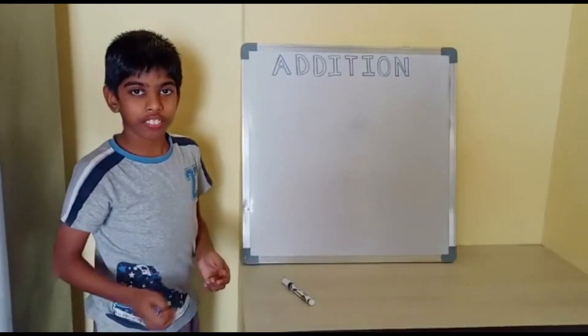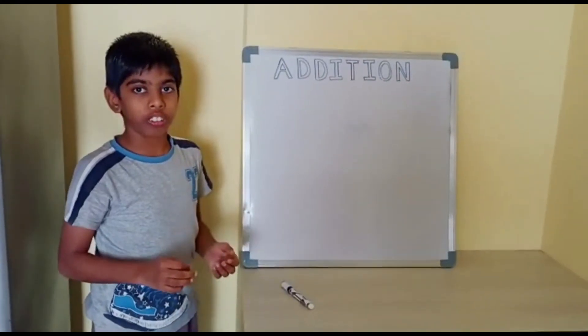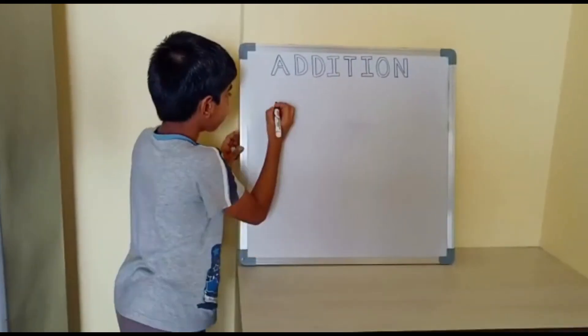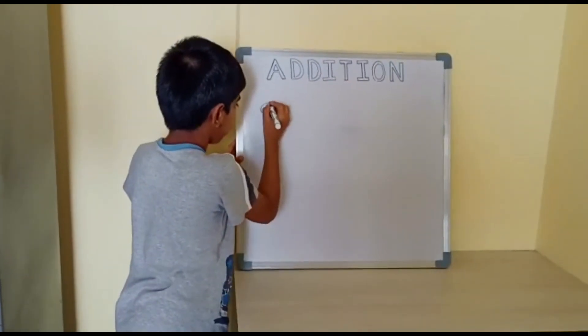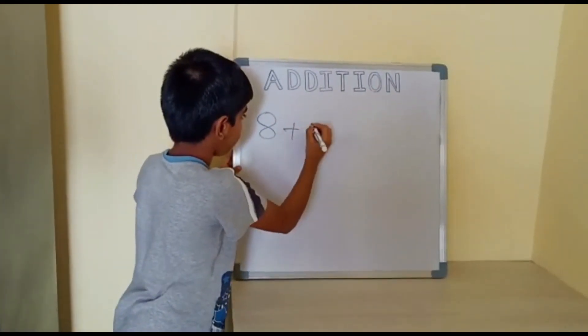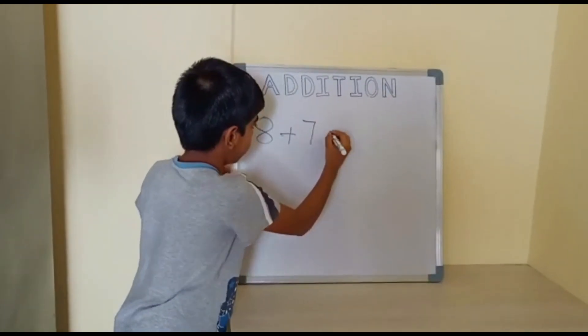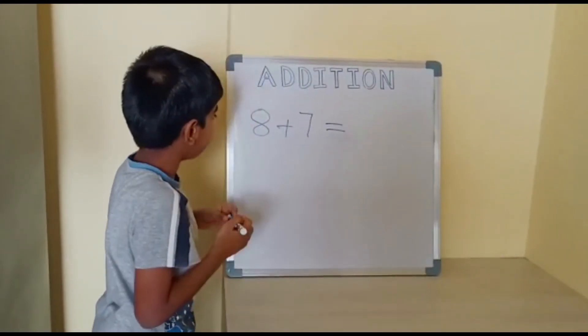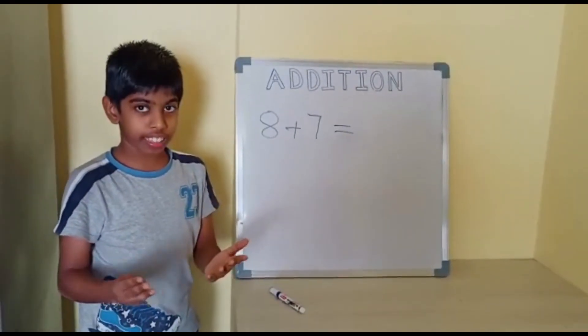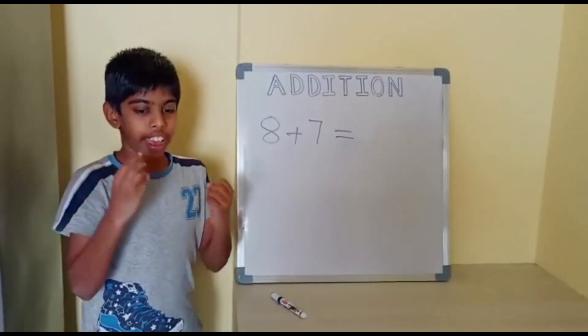Another question using the same method. Now the question is 8 plus 7 equals to 8 in the hand and 7 in the mind.